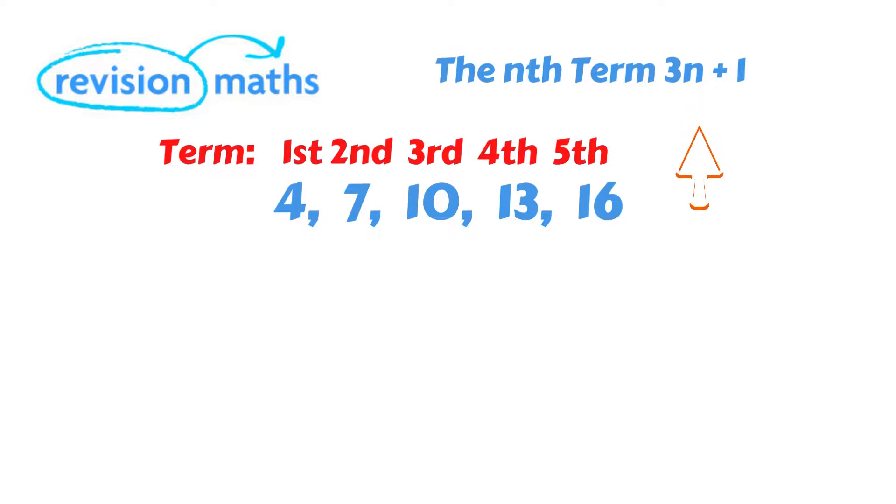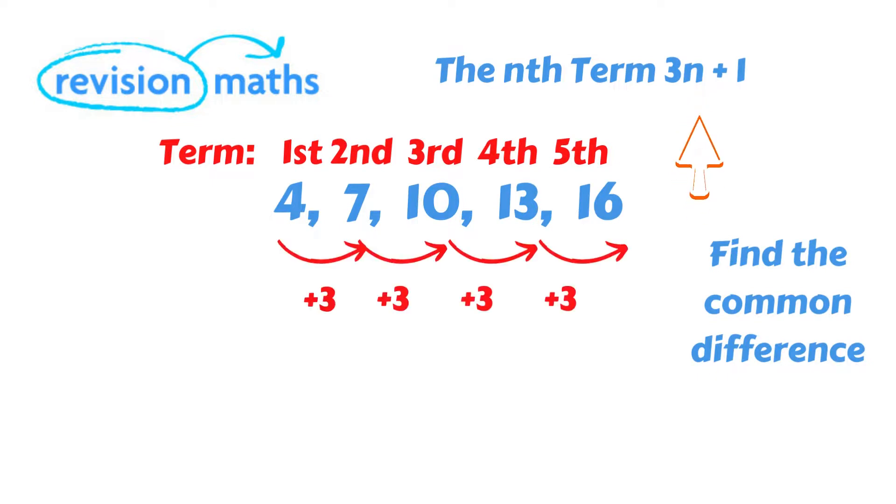So how do you work out what numbers to use in the expression? Firstly, we need to find the common difference. In this case the numbers are being added each time. So the difference is plus 3. We then take this common difference and place the letter n beside it. So we get 3n.